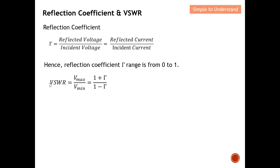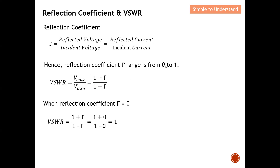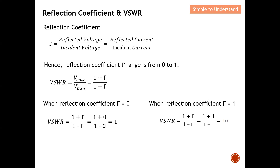Next, let's move on to VSWR. The VSWR formula has been proved previously. If we substitute the Refraction Coefficient equal to 0 into the VSWR equation, we get VSWR equal to 1. On the other extreme, when the Refraction Coefficient equals 1, VSWR becomes infinity because 1 minus 1 equals 0, and anything divided by 0 is infinity. So the VSWR range is from 1 to infinity, while the Refraction Coefficient range is from 0 to 1.